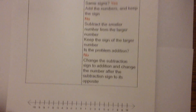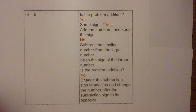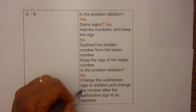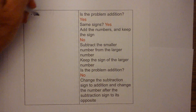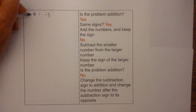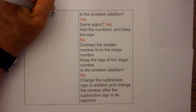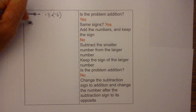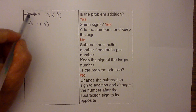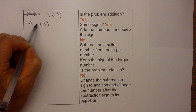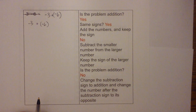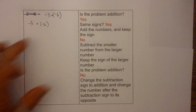Now we have a subtraction problem. Is the problem addition? No. So we move all the way down: change the subtraction sign to addition and change the sign of the number right after the subtraction sign to its opposite. So we rewrite this problem. It becomes negative three plus negative six — we changed the subtraction to addition and the positive six became a negative six — its opposite.